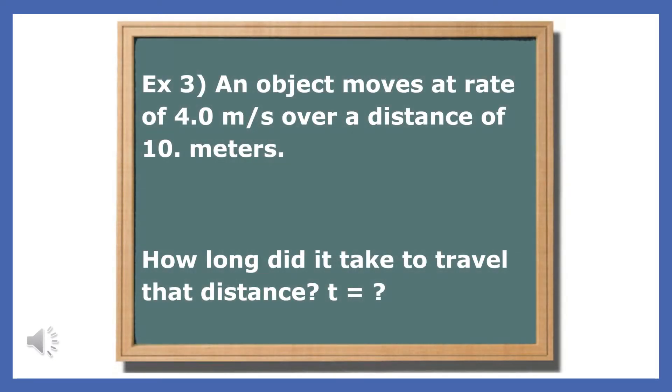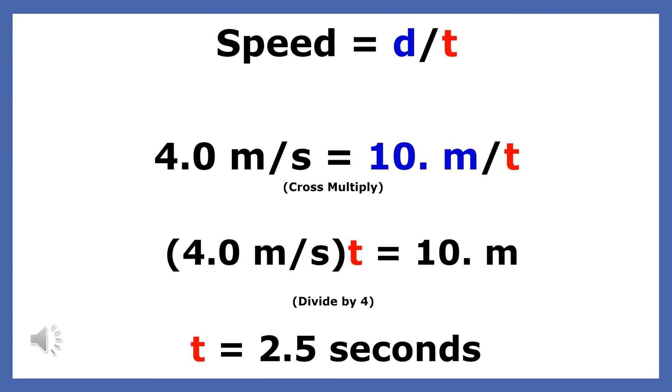An object moves at a rate of 4 meters per second over a distance of 10 meters. How long did it take it to travel that distance? This is a problem that is very difficult to do without an equation, but that's not a problem because you will have to use an equation if you want to get credit anyway. Step 1, write out the equation. Step 2, substitute the speed and distance traveled. You must include units when you substitute all your information. We then cross multiply and divide to isolate the unknown. The answer is 2.5 seconds. Your answer must always include units.